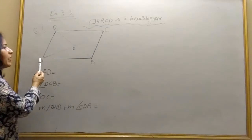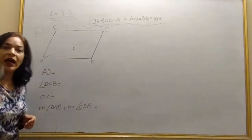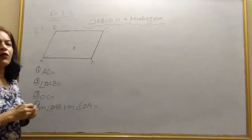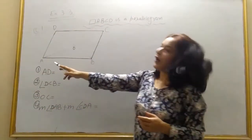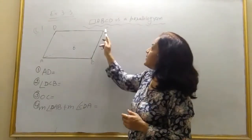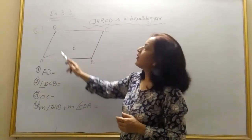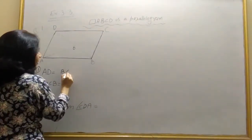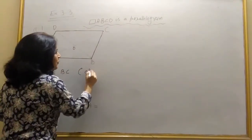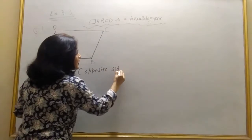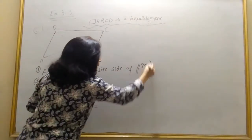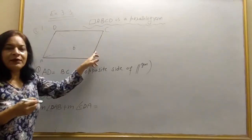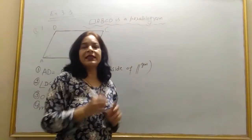We have here given a parallelogram ABCD and we have to complete four statements. First statement: in parallelogram ABCD, AD will be equal to BC. Why? Opposite sides of a parallelogram are equal. You can write parallelogram with the symbol of parallel lines, then GM. Here, AD will be equal to BC because opposite sides of a parallelogram are equal.